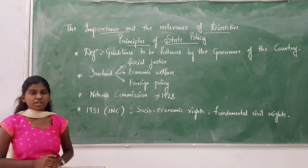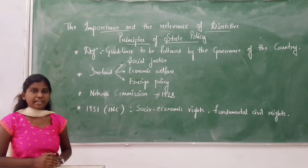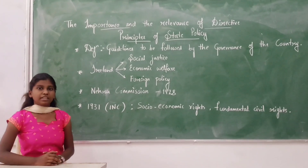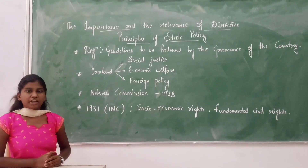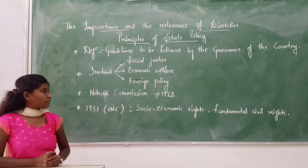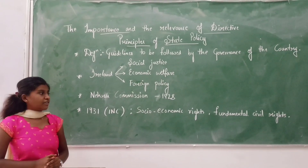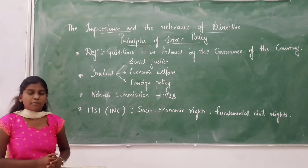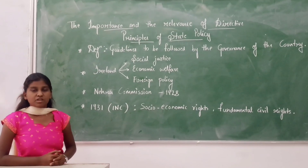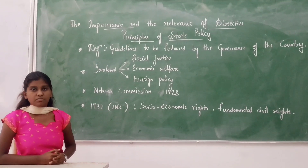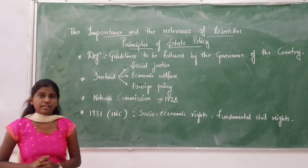In 1928, the Nehru Commission proposed a constitutional reform for India. In 1931, the Indian National Congress adopted resolutions for social and economic rights, and fundamental civil rights such as abolition of untouchability, committing the results to socialism.